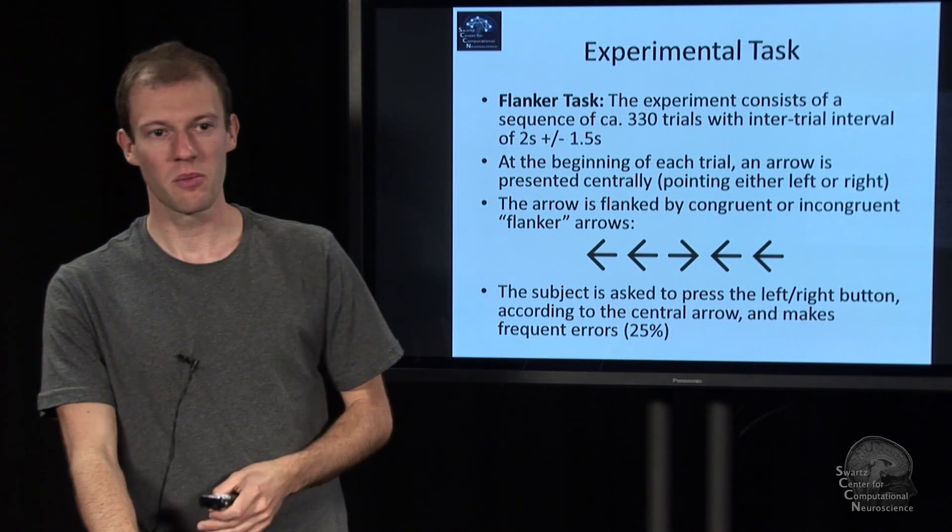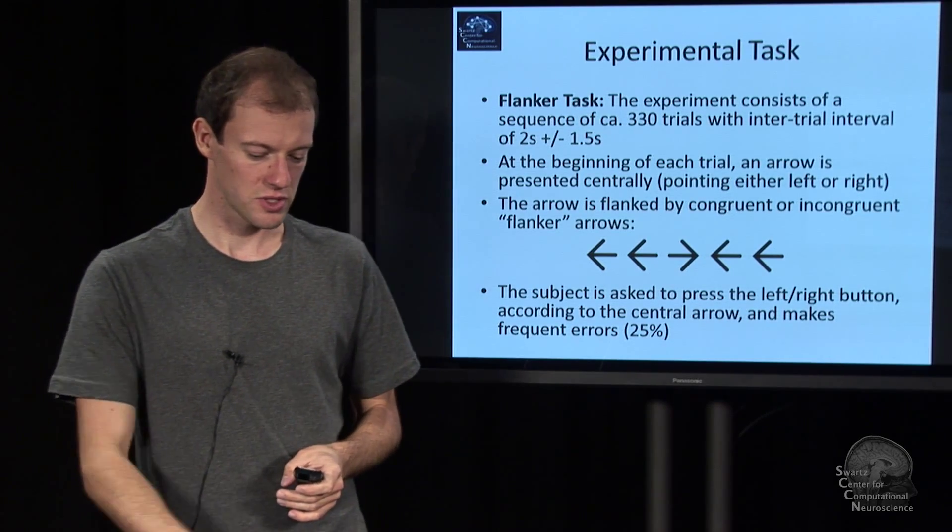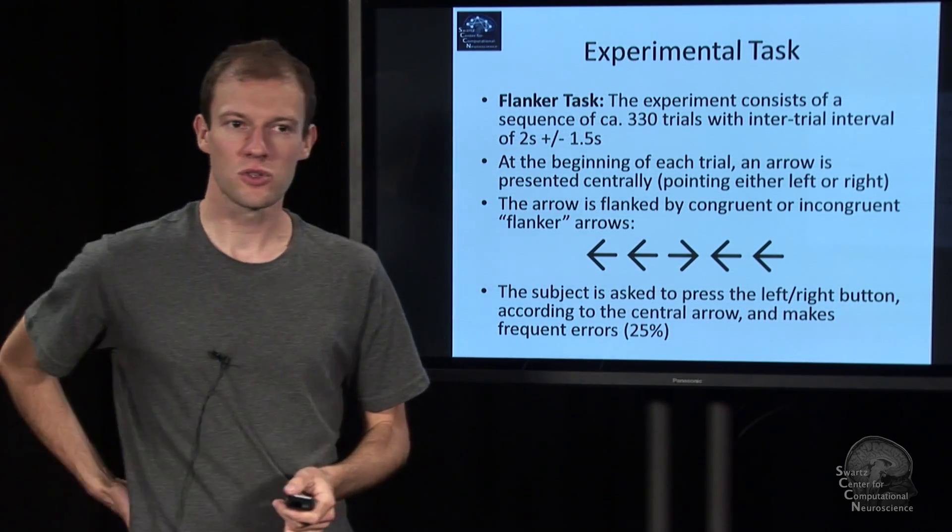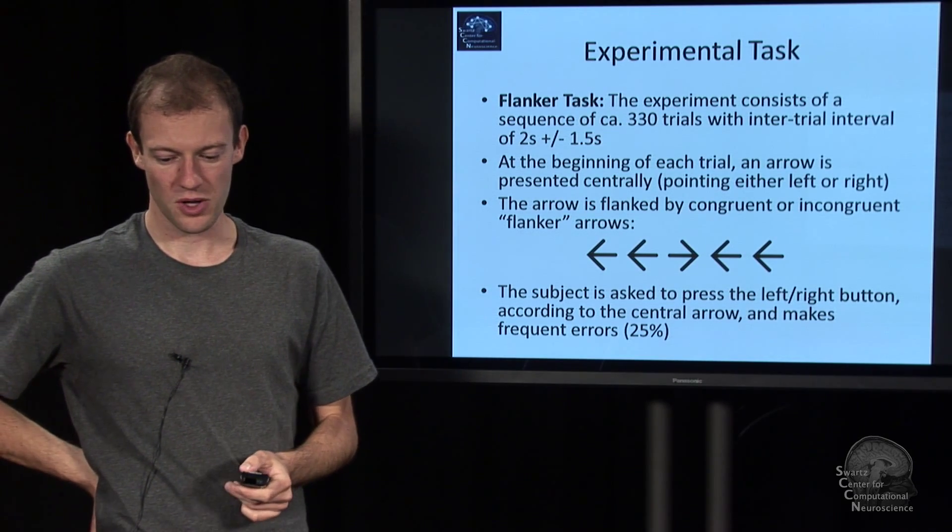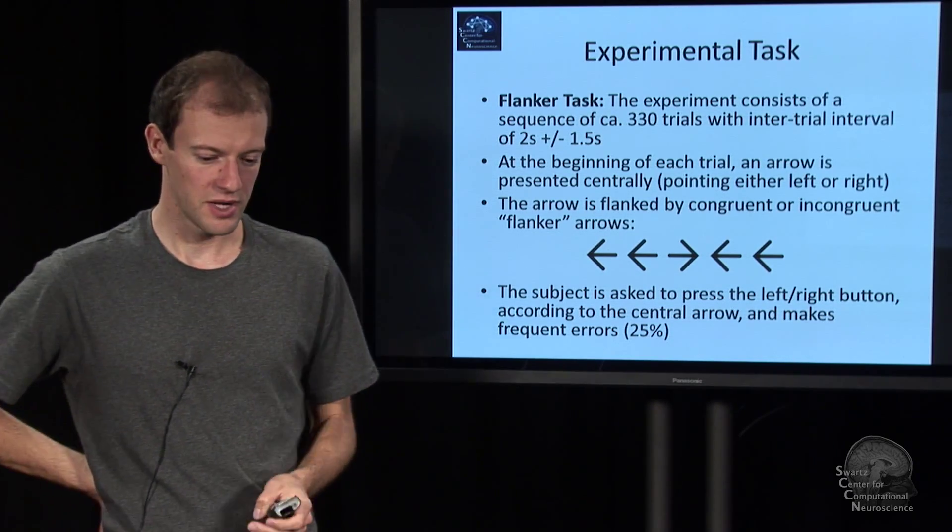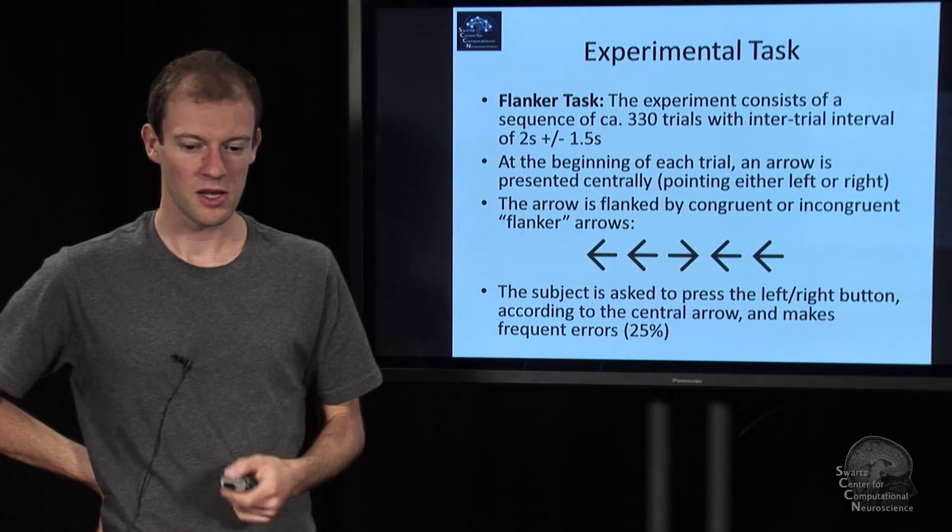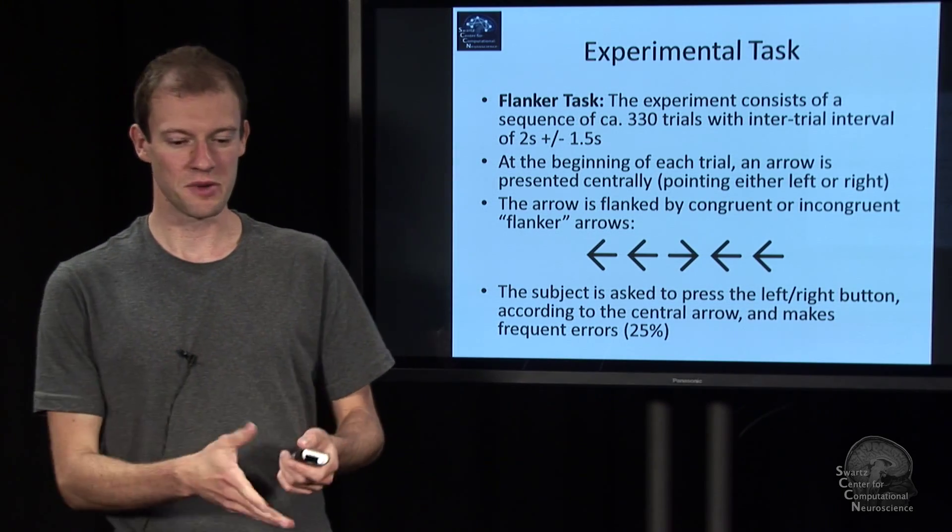Person is pressing the wrong button, and 75% is no errors. And now what we want to do is we want to predict whether the person on a given button press, in response to this kind of stimulus, is making an error or not, without knowing the label in advance.